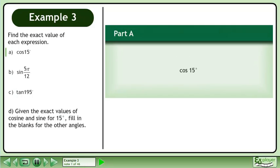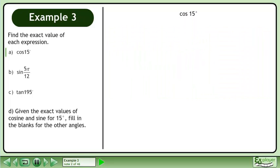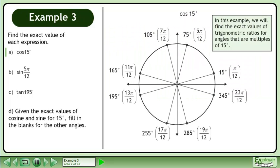Find the exact value of each expression. In part A, find the exact value of cos 15 degrees. In this example, we will find the exact values of trigonometric ratios for angles that are multiples of 15 degrees.